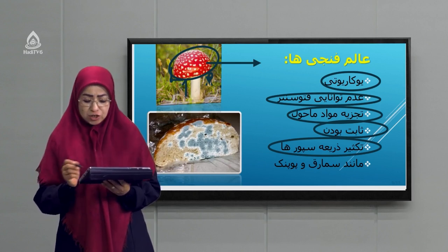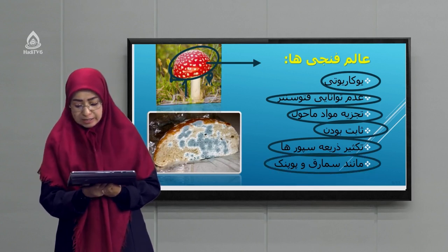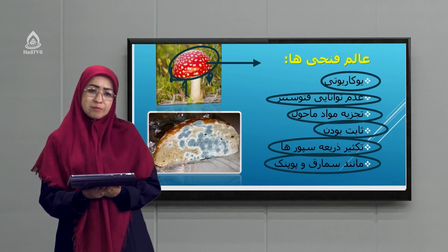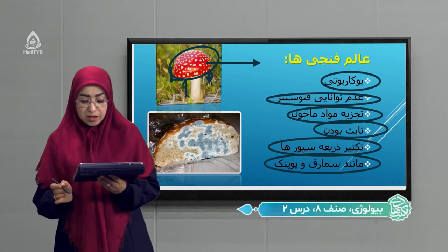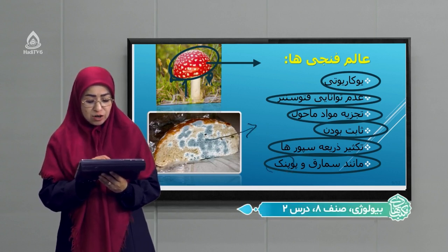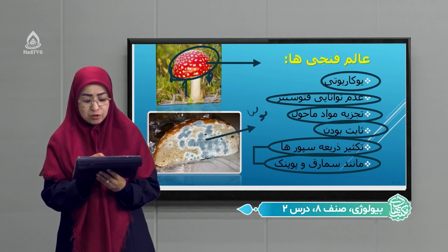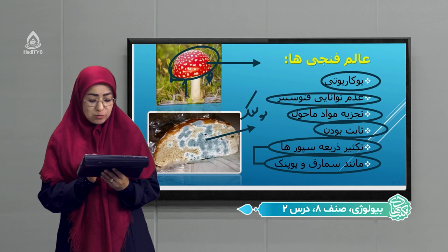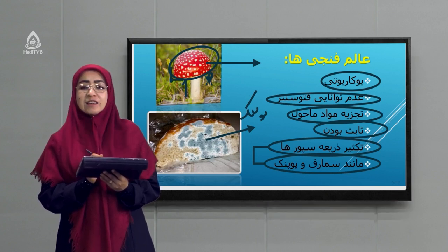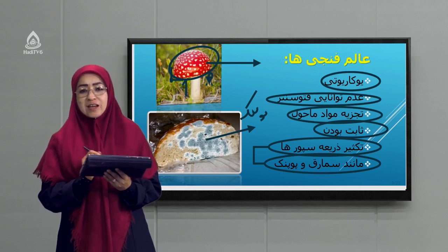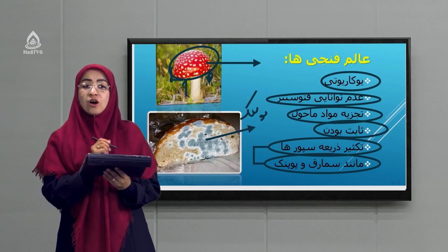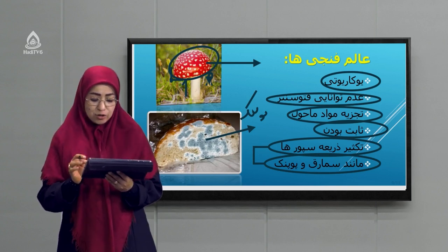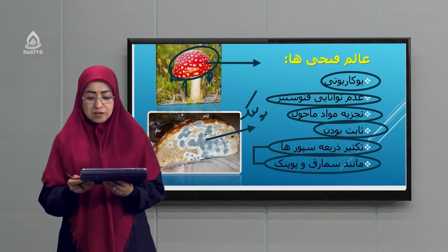از گروه فنجیه‌ها دو گروه فراوان‌تر داریم: یکی سماروغ‌ها که بعضی خوردنی و در غذا استفاده میشوند و بعضی سمی هستند، و یک گروه دیگر پوپنک‌هاست. در تصویر نانی میبینید که پوپنک زده — این پوپنک جزو خانواده فنجیه‌هاست. یادم هست یک سال سوال کنکور بود که «پوپنک نان متعلق به کدام آلم است؟» — جواب درست آلم فنجیه‌هاست.